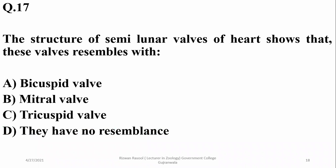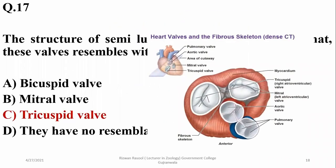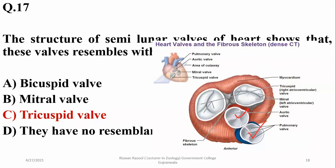The structure of semilunar valves of the heart shows that these valves resemble the tricuspid valve in shape, so the right option is tricuspid. As you can see, the semilunar valves of the heart have a structure resembling the tricuspid valve, also called the right atrioventricular valve.